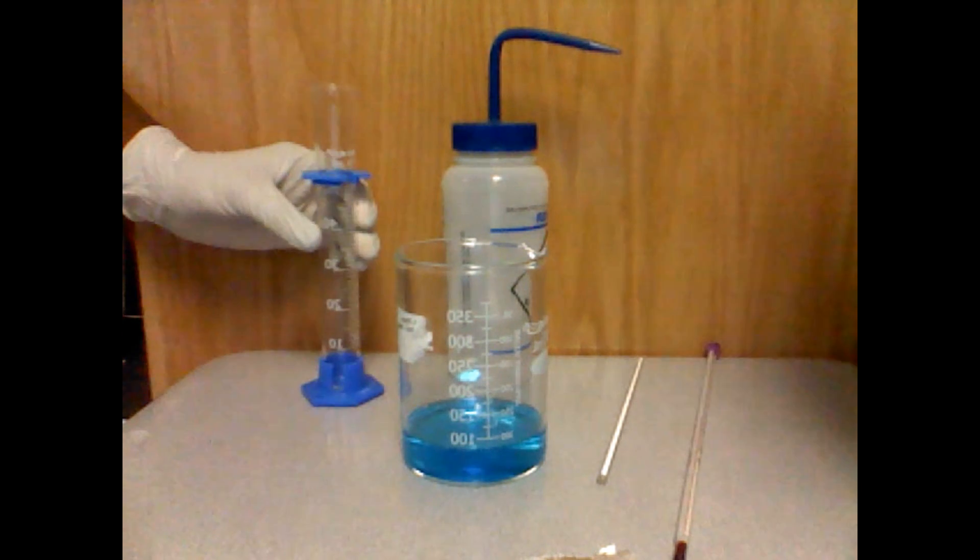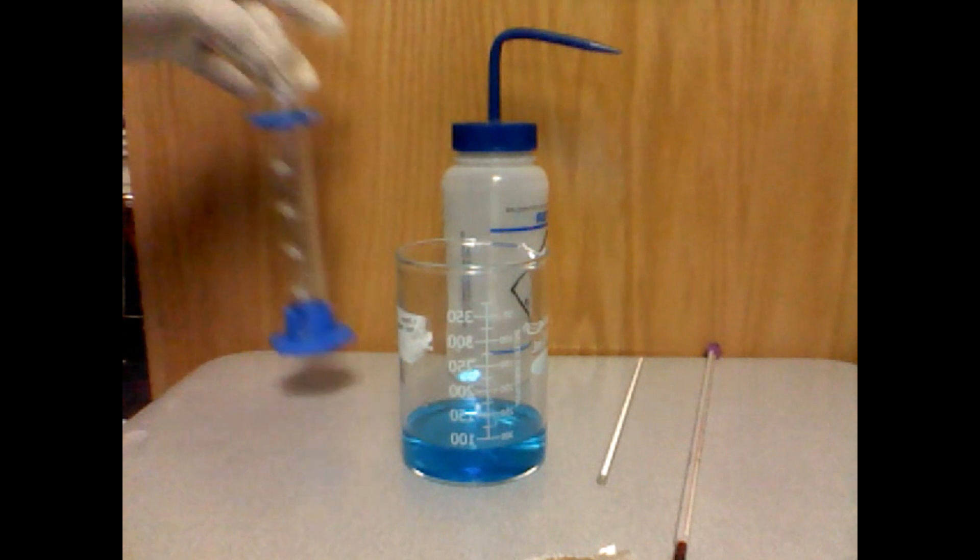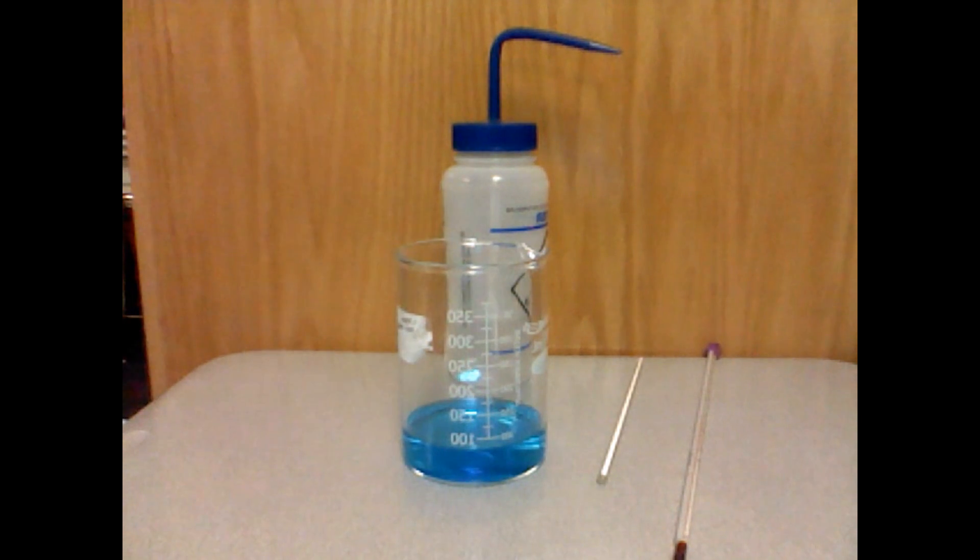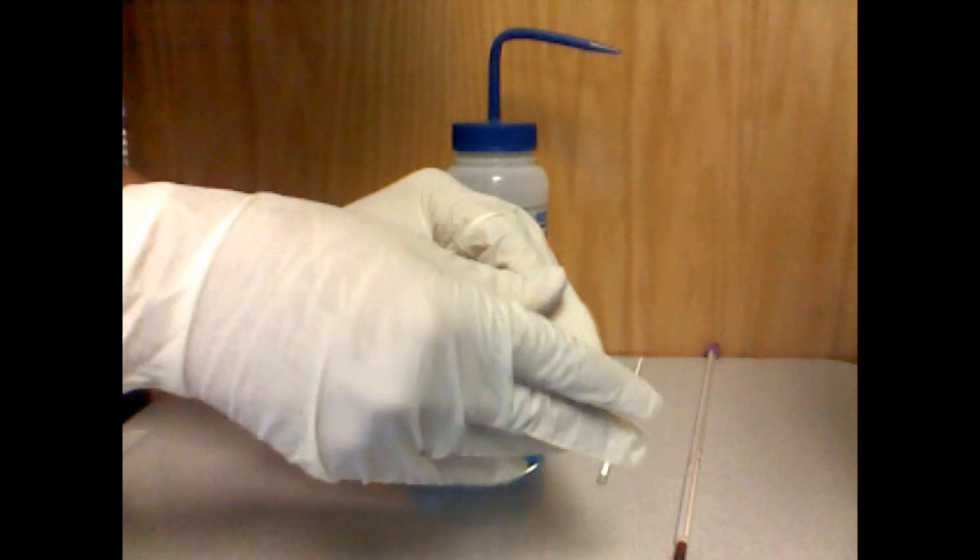We have our piece of aluminum, and now we will loosely roll the foil enough to make it fit into the beaker.